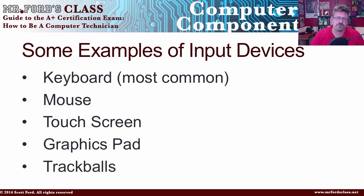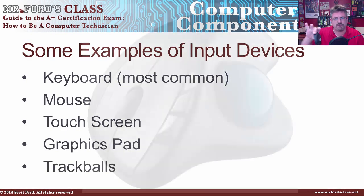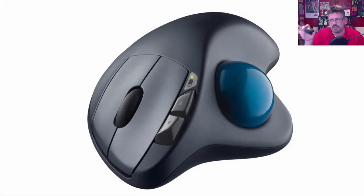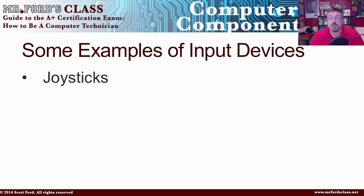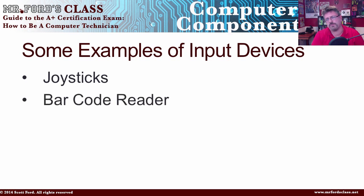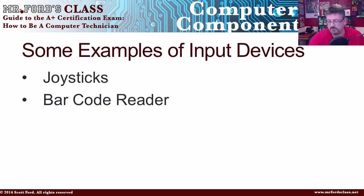The trackball is kind of like a mouse, except the mouse remains in one place and your thumb manipulates a ball to move the cursor around the screen. Joysticks — we're all familiar with those, the old ones we played Pac-Man on. The barcode reader: if you go to any grocery store, it goes beep beep beep. You can also get a barcode reader for your smartphone to scan products and check prices through Amazon.